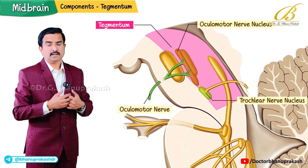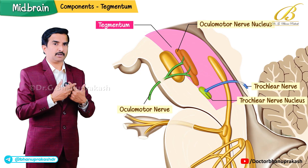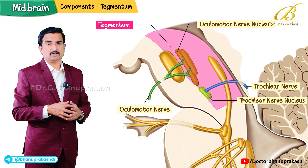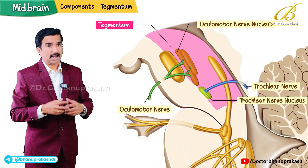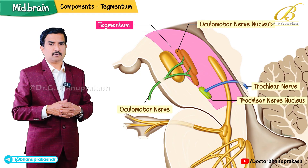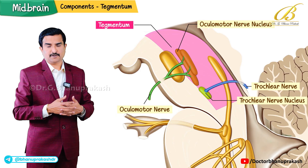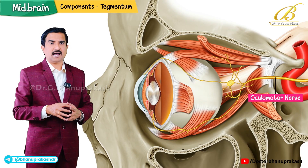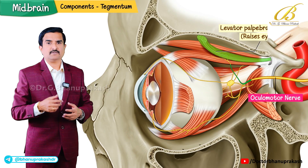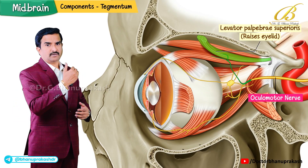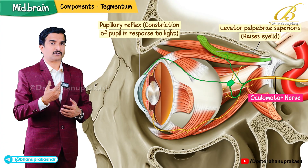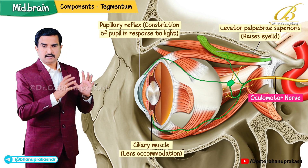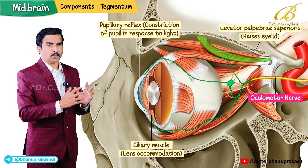The oculomotor nerve (cranial nerve III) and the trochlear nerve (cranial nerve IV) originate from the tegmentum and are responsible for eye movements. The oculomotor nerve controls most of the eye's motor movements, including the levator palpebrae superioris which raises the eyelid, pupillary reflex which is constriction of the pupil in response to light, and the ciliary muscles for accommodation of the lens.